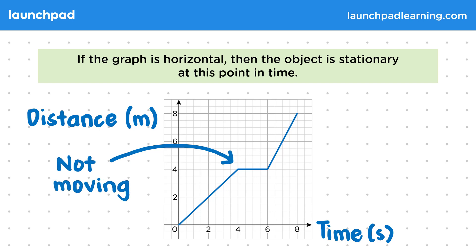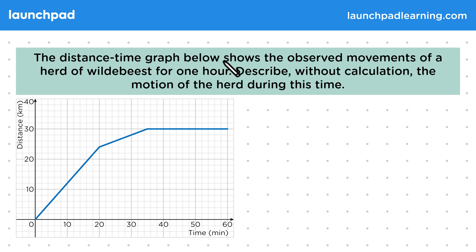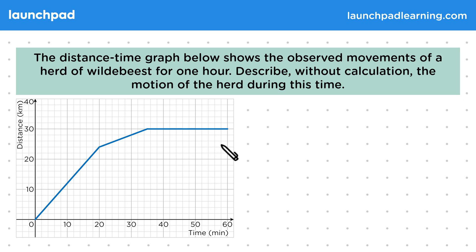In your exam, you'll be expected to be able to describe the motion shown in a distance-time graph qualitatively. Let's try doing this now with an example. The distance-time graph below shows the observed movements of a herd of wildebeest for one hour. Describe, without calculation, the motion of the herd during this time. As we can see, there are three different sections of the graph, so let's structure our answer by looking at each section individually.